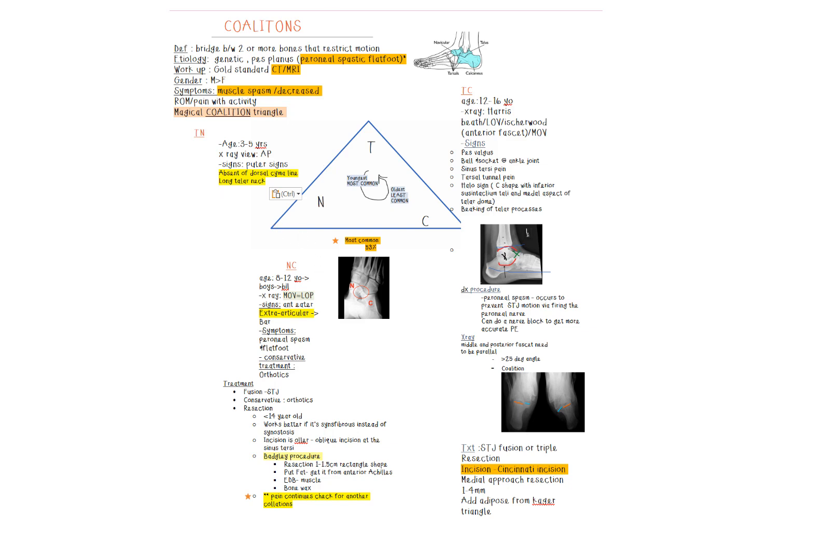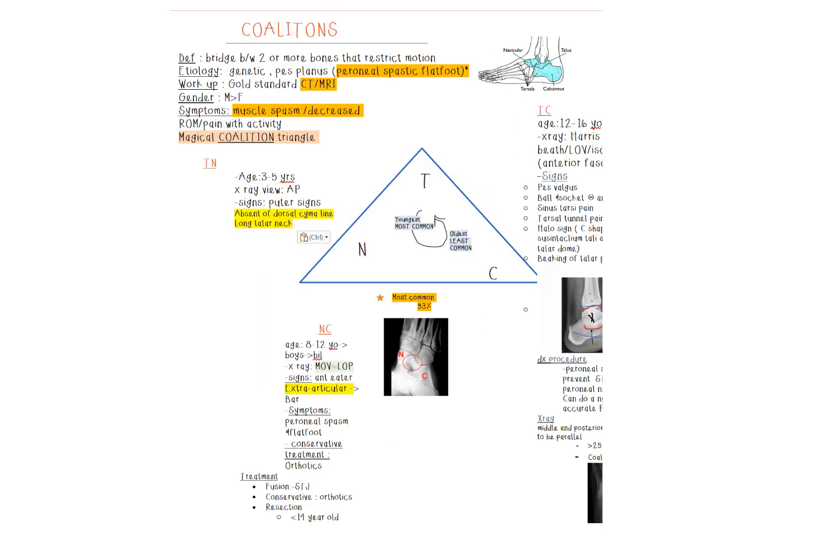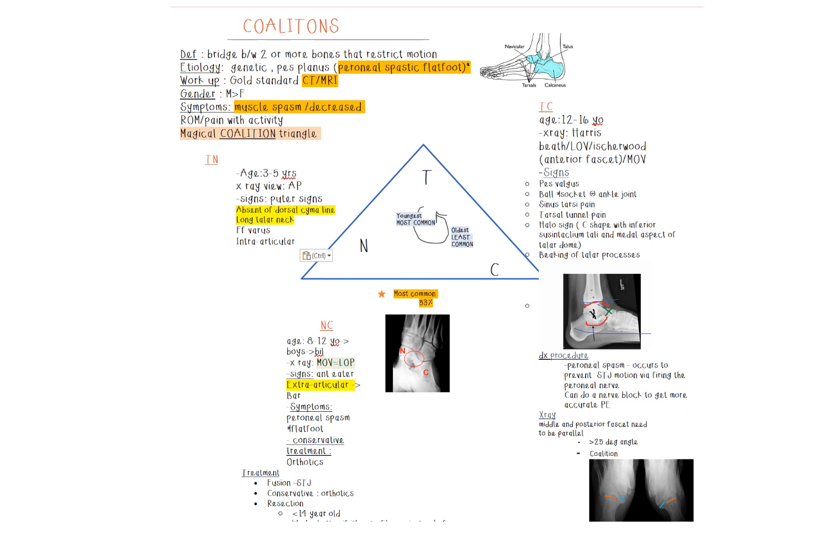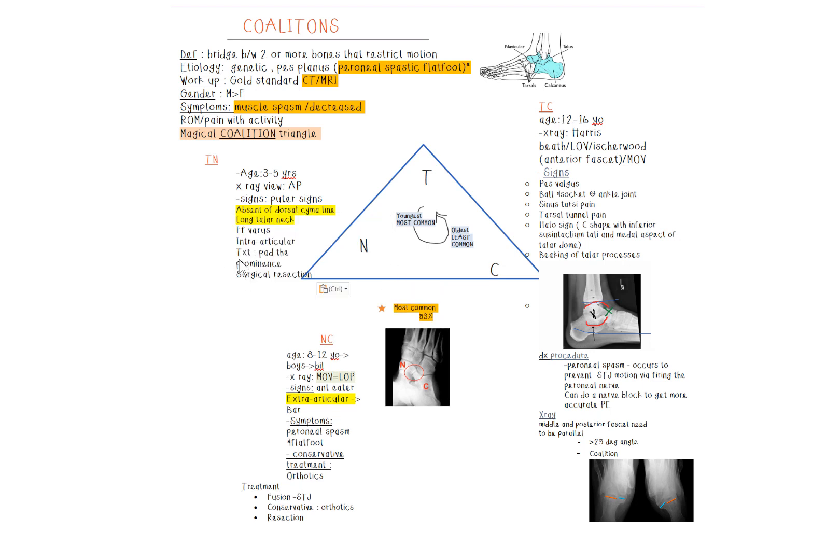Some of the things I want you to look out for—the sign for this one is called the putter sign. You'll notice that the cyma line is absent dorsally, and you'll notice a very dead giveaway is usually a really long talar neck. That's because the talus and the navicular kind of fuse together and form this big bone. Pes cavovarus is another look to the foot, and then intra-articular coalition for the TN. Remember, the NC was the one that was extra-articular.